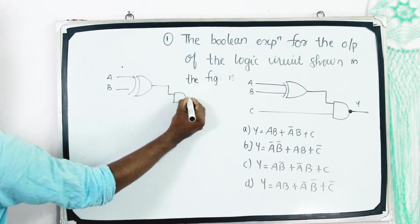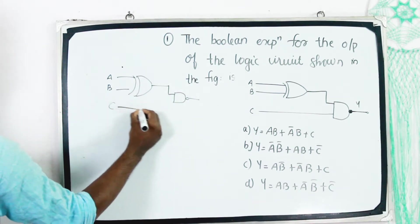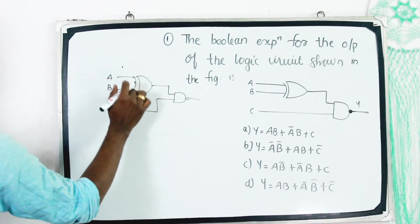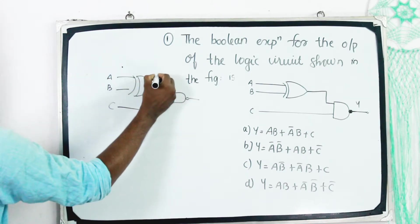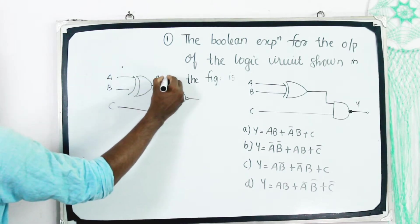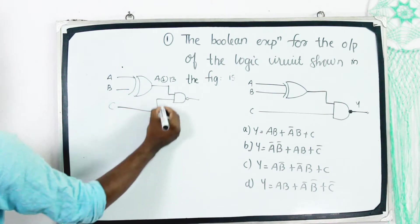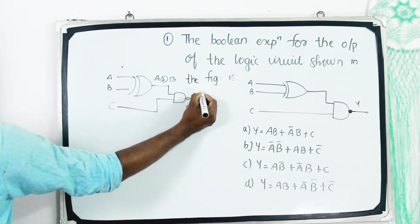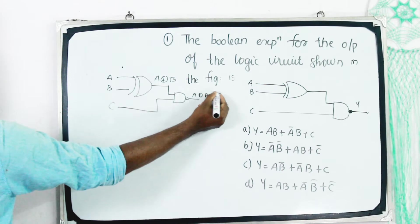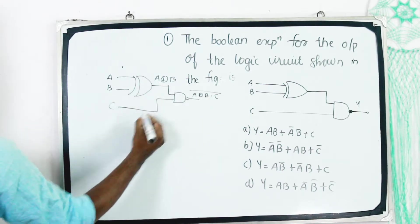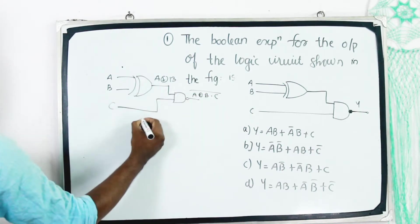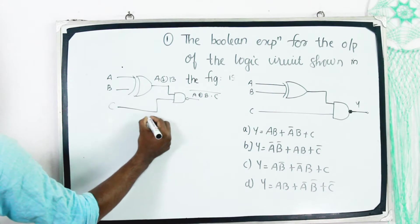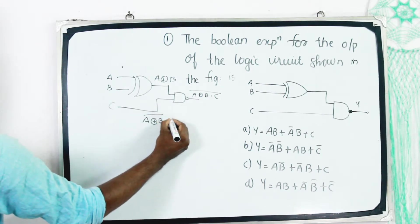If we think about the diagram, A and B is the exact same thing — A XOR B. See if C has a joint: A XOR B dot C. The whole complement is the exact same thing. So the output is A XOR B, the whole complement, dot C.